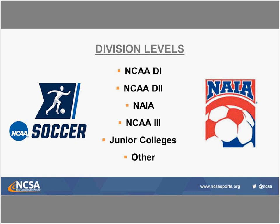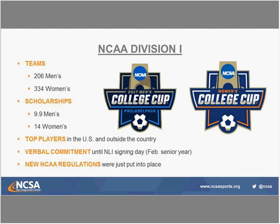The division levels are broken down into five main categories. There are some schools in Pennsylvania within the Penn State satellite system that don't compete in a specific division — they're in their own division. But the primary division levels are Division I, Division II, NAIA, Division III, and junior colleges. Those are the primary five we need to consider when going through this process.